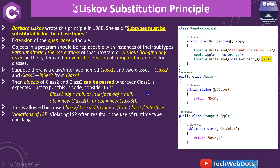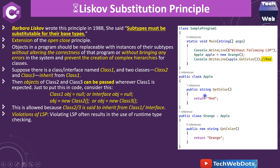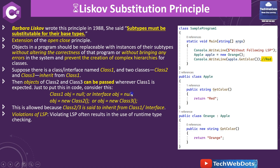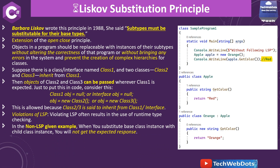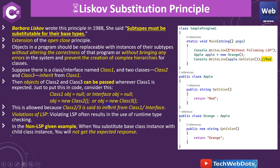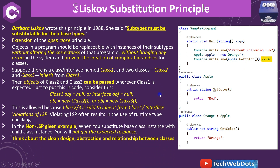We can also solve this problem by applying the 'virtual' keyword on GetColor in the base class and using 'override' instead of 'new' in the child class. Then if we write apple = new Orange(), we will receive orange as the result. But note that in the non-LSP example, when you substitute a base class instance with a child class instance you will not get the expected response — it returns red instead of orange.